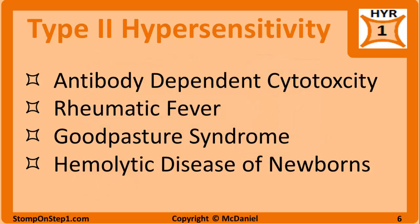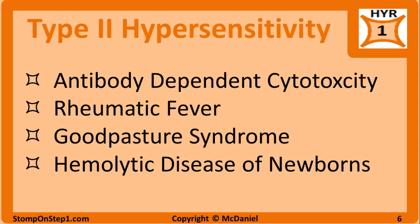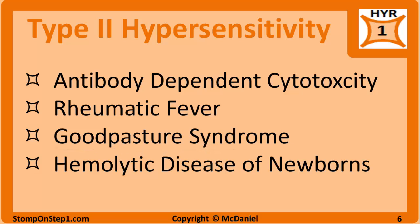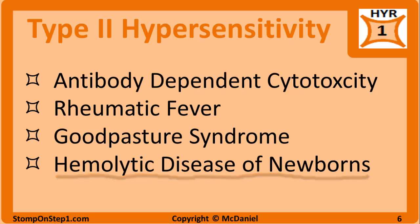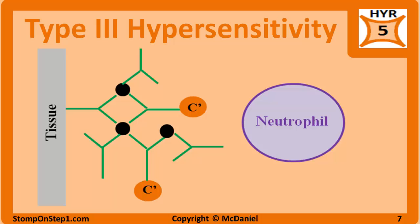Examples of type 2 hypersensitivity include rheumatic fever, where the body's own cells look very similar to strep cells and the body accidentally attacks them; Goodpasture syndrome, where there are anti-glomerular basement membrane antibodies; and hemolytic disease of the newborn (erythroblastosis fetalis), where an Rh-negative mother carrying a second Rh-positive child produces maternal IgG that targets fetal red blood cells.